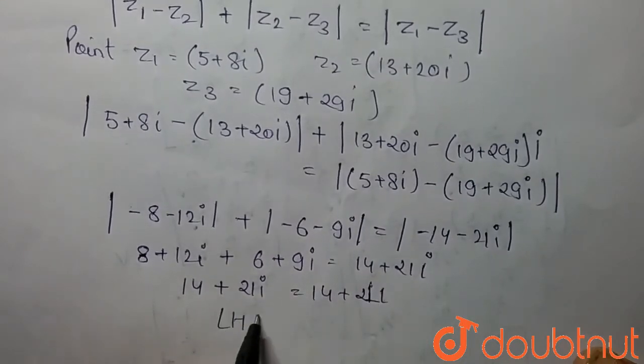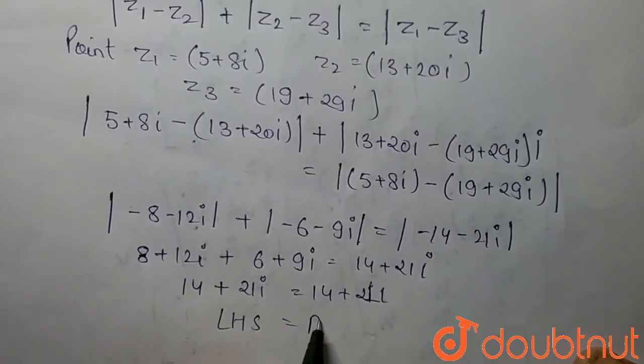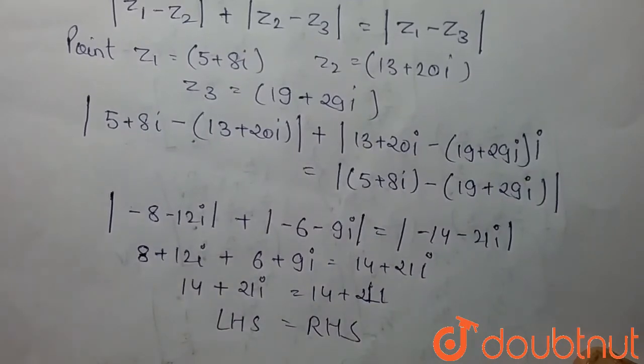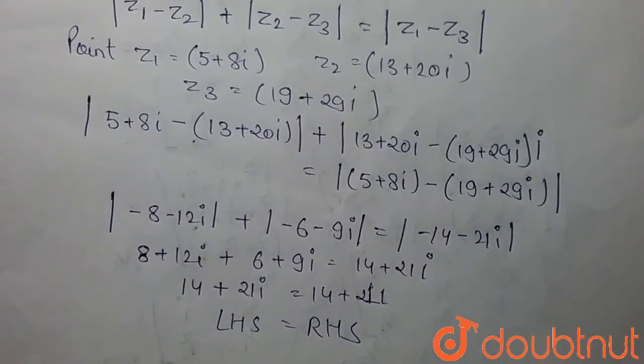LHS is equal to RHS, which means these three points are collinear. Thank you.